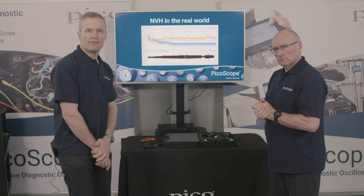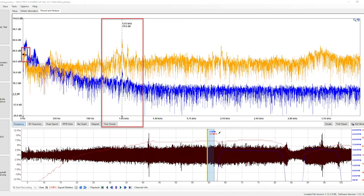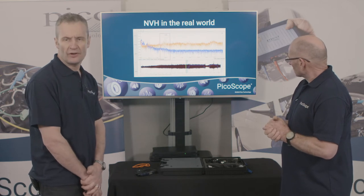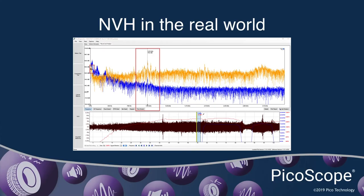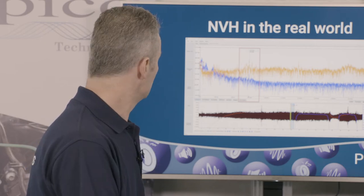Here we have a customer complaint of winding noise in the cabin. Looking at the signal history, we have road speed but no engine speed — this is a hybrid vehicle, so the transmission is driving the vehicle on electric power only. On the NVH chart we have two microphones: one in the cabin (blue), which records a peak at about 1000 hertz, one kilohertz; and one closer to the transmission at the same frequency but greater amplitude.